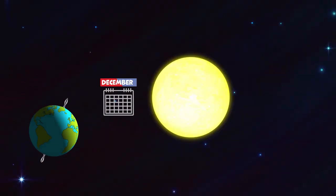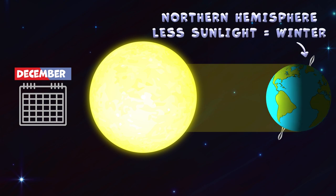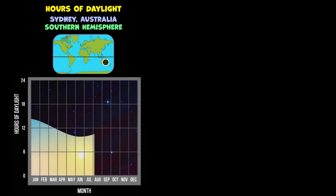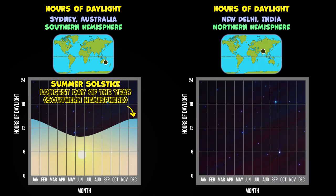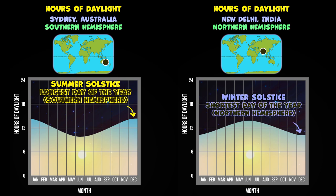In the month you Earthlings call December, the Northern Hemisphere is tilted away from the Sun and gets less direct sunlight, which can make it chilly, and also means that it's the winter season. At the same time, the Southern Hemisphere is tilted towards the Sun, so it gets more direct sunlight and experiences the summer season. The day on which the Southern Hemisphere gets the most sunlight of the year is called the summer solstice. The Northern Hemisphere gets the least amount of sunlight on that day, and people in the North call it the winter solstice.